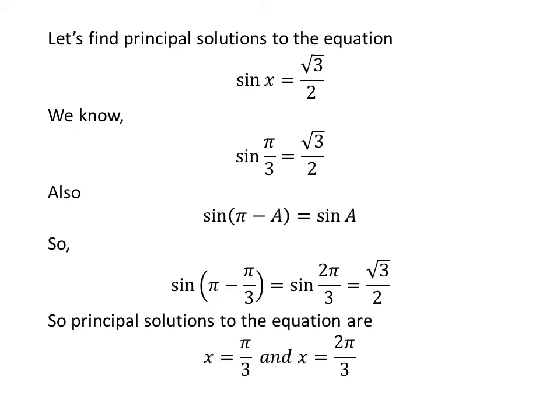So, the principal solutions to the equation sine of x equals square root of 3 upon 2 are π upon 3 and 2π upon 3.